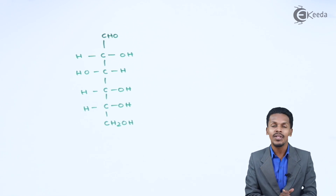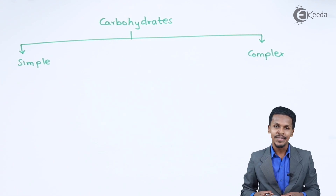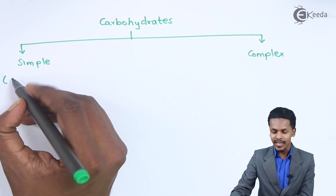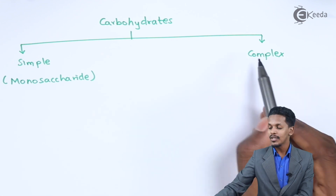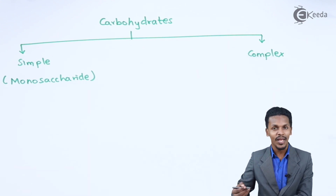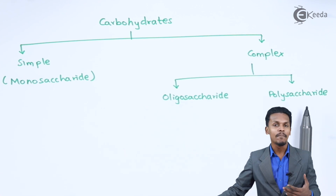Now let us understand the classification of Carbohydrates. Carbohydrates are basically classified into two types: Simple and Complex Carbohydrates. Simple Carbohydrates are also known as Monosaccharides. Complex Carbohydrates are again classified into two types: Oligosaccharides and Polysaccharides.